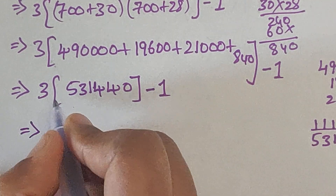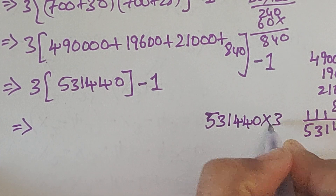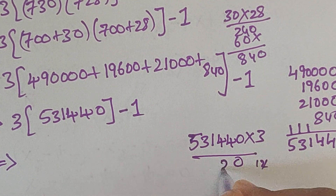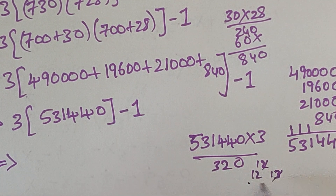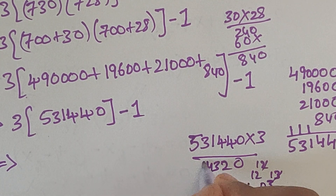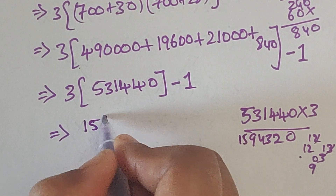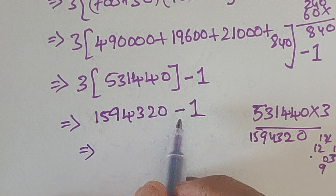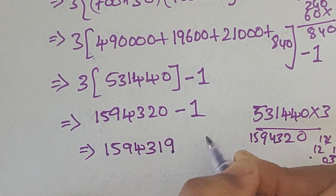Now 3 times 531440: 3 times 0 is 0; 3 times 4 is 12, write 2 carry 1; 3 times 4 is 12 plus 1 is 13, write 3 carry 1; 3 times 1 is 3 plus 1 is 4; 3 times 3 is 9; 3 times 5 is 15. So we get 1594320. Then 1594320 minus 1 equals 1594319. This is the final answer.